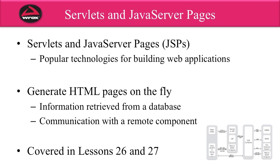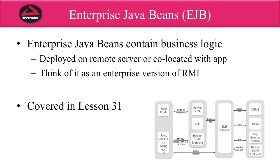We'll actually cover servlets and JSPs in detail in lessons 26 and 27. Another component in the Java Enterprise Edition are EJBs, or Enterprise Java Beans. You can make use of Enterprise Java Beans to contain your business logic. You can take some Java code, deploy it as an Enterprise Java Bean, and it can be deployed on a remote server. You can have client programs that will call the EJB to retrieve data or perform operations. You can think of EJBs as simply an Enterprise version of RMI — the same concepts of client-server development with RMI, just on a different level with a different approach for developing and deploying them. We'll cover EJBs in lesson 31.